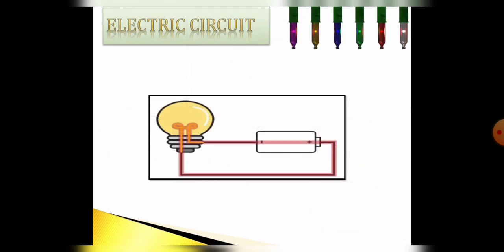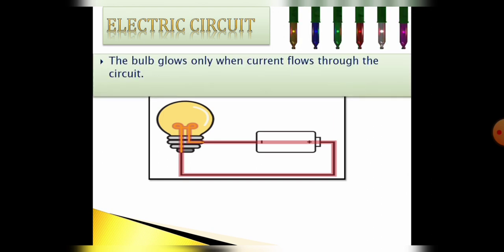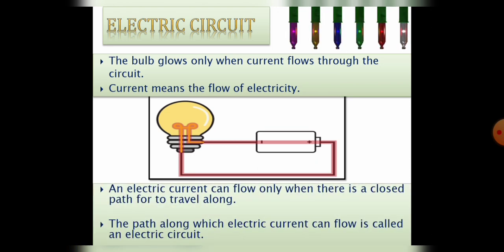Students, how we get electricity? We get electricity due to flow of current in wire. In the same way, the bulb glows only when current flows through the circuit. So in short we can say current means the flow of electricity.